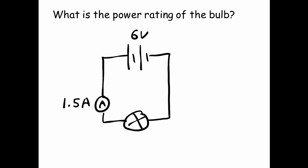What is the power rating of the bulb? Well, P equals IV. We've got 6 volts for our voltage and 1.5 amps for our current. So 6 times 1.5 gives us 9 watts.